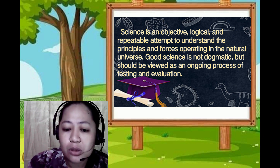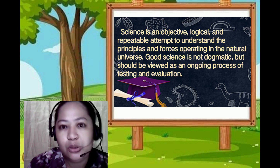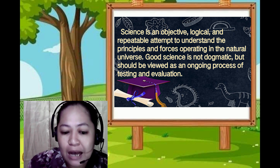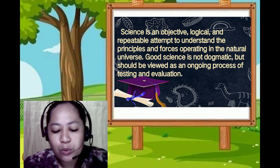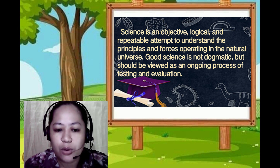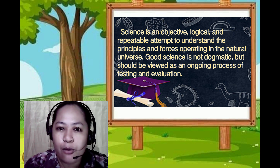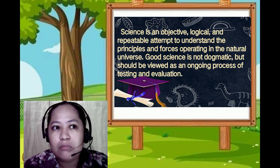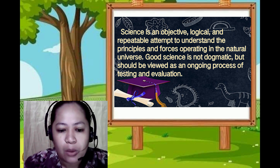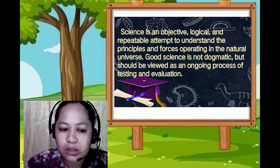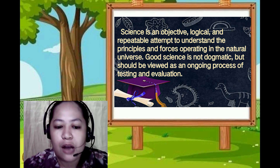Science is also an objective, logical, and repeatable attempt to understand the principles and forces operating in the natural universe. Good science is not dogmatic but should be viewed as an ongoing process of testing and evaluation. Everything going on in our natural universe is explained by science. It is logical and repeatable — we do experiments again and again until we are able to prove the fact or the true reason for a particular happening.